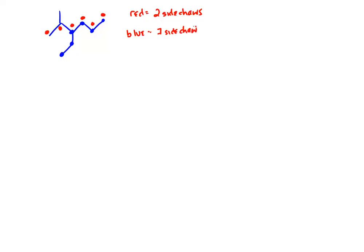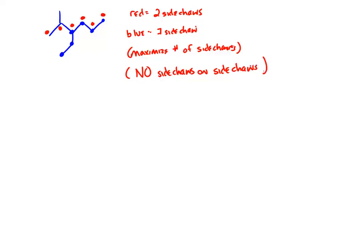There are no side chains on side chains. Now, there can be — we can certainly draw molecules where there's a side chain on top of a side chain — but we're just not going to do it in this class. It's pretty easy to draw molecules that are very difficult to name. I can draw molecules that I don't know how to name without looking up the rules sometimes. So we're going to avoid doing that in this class.